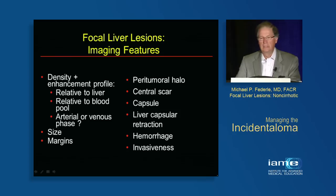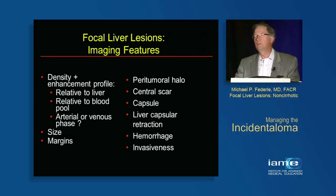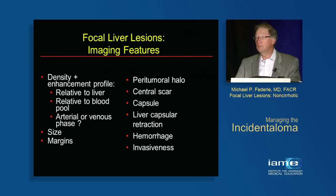We really need to define characteristics more specifically. We want to talk about density and enhancement profile relative to liver and relative to blood pool — which is very important when talking about cavernous hemangiomas — and we need to discuss the phase of imaging. For example, a liver metastasis from a pancreatic neuroendocrine tumor: on non-contrast it's hypo or iso-dense, on arterial phase it's usually heterogeneously hyperdense, and on delayed phase it's hypodense.